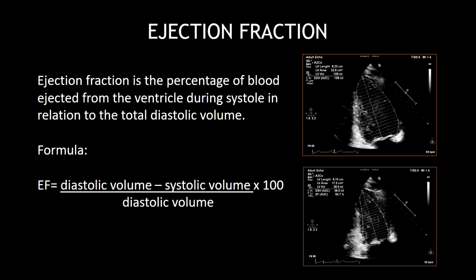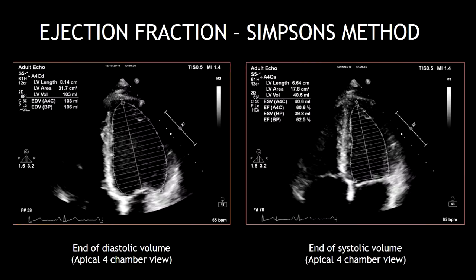Here, you can see the formula of the ejection fraction by Simpson's method, which is an estimation made by volumes. When you apply this method, you will get the left ventricular diastolic and systolic volume, and with this, you can calculate the ejection fraction by using the previous formula.